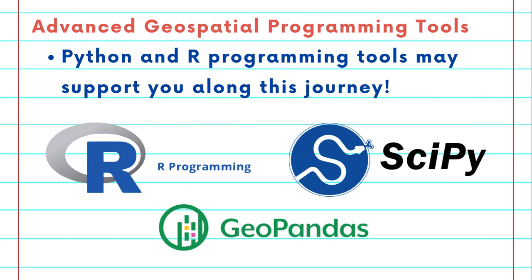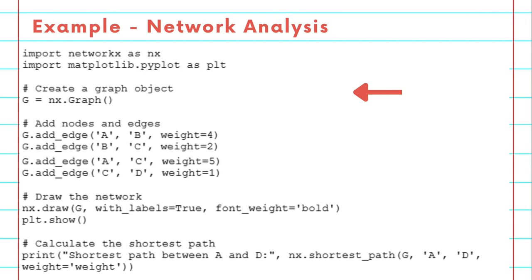Let's take an example of network analysis. In this example, we are creating a simple graph to represent connections between different points or nodes. We add edges to represent the links between these nodes, along with weights that could signify distance, strength of the connection, or any other metric. Finally, we visualize this network and use NetworkX to find the shortest path between two points. This kind of analysis is crucial for understanding complex relationship dynamics in a variety of fields.